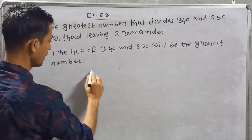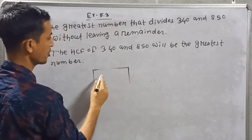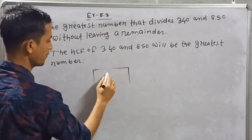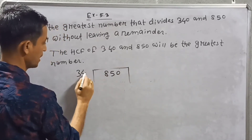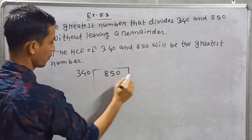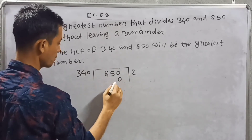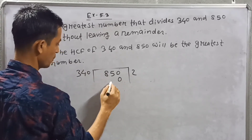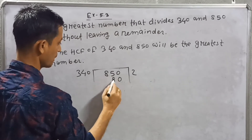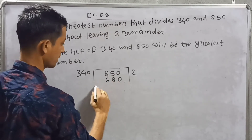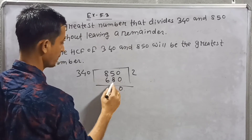Here we will use the division method. So 850 divided by 340: 340 goes 2 times, 2 × 340 = 680, subtract from 850 to get remainder 170. Carry 170.